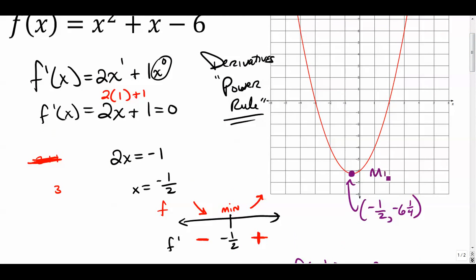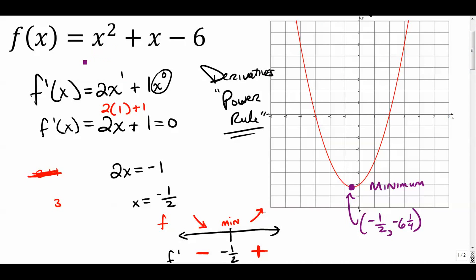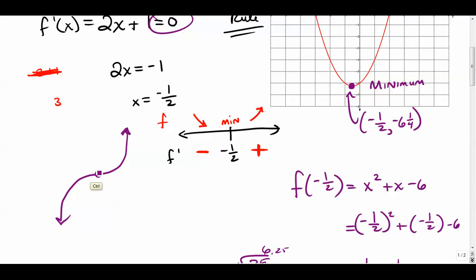So our minimum value is at negative one-half, negative six point two five. We get that by finding the first derivative, setting it equal to zero, solving, and doing the first derivative test. Sometimes the test yields a positive on both sides, meaning no max or min — the graph just flattens out, like x cubed does.